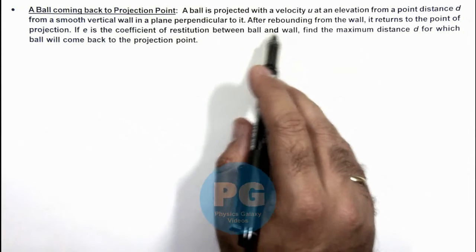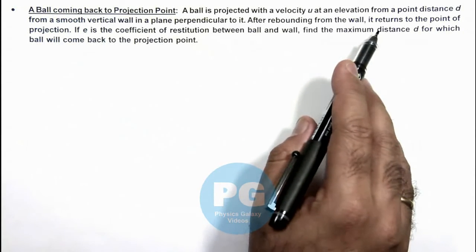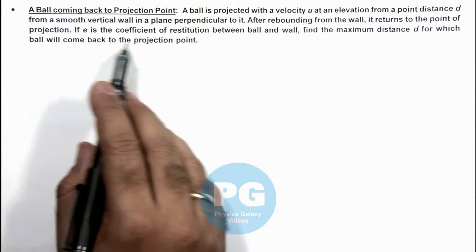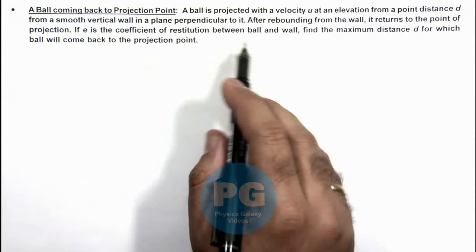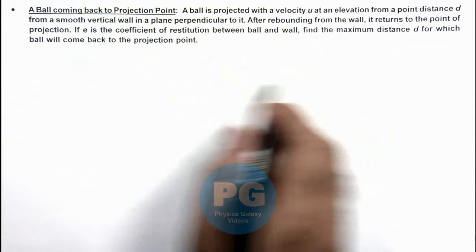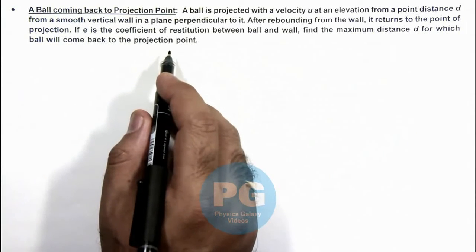Now it is saying after rebounding from the wall it returns to the point of projection. If e is the coefficient of restitution between ball and wall, we are required to find the maximum distance d for which ball will come back to the projection point.